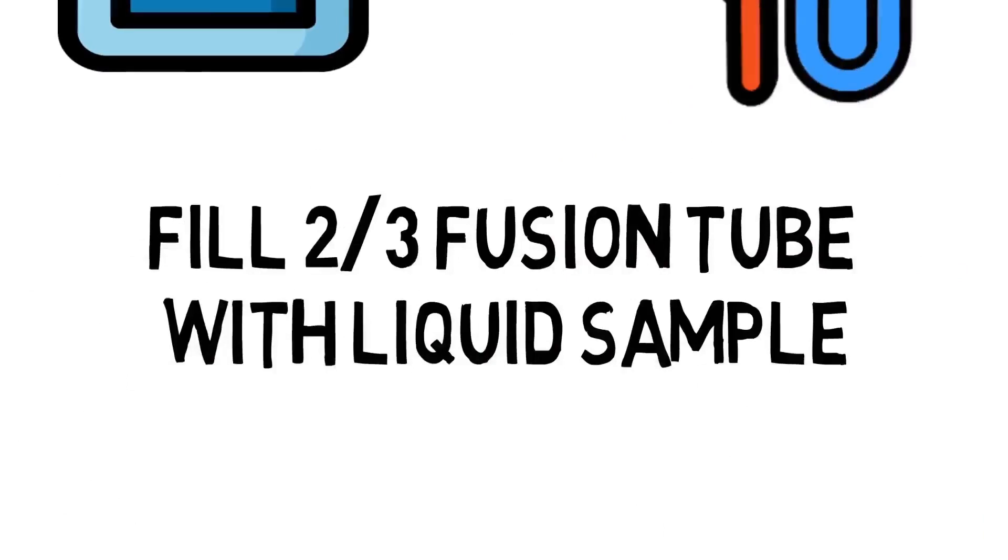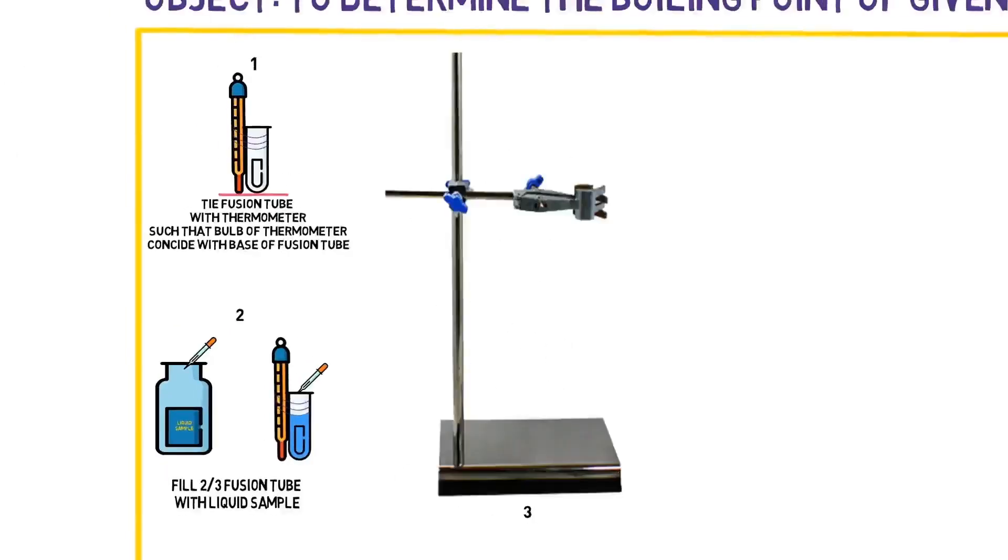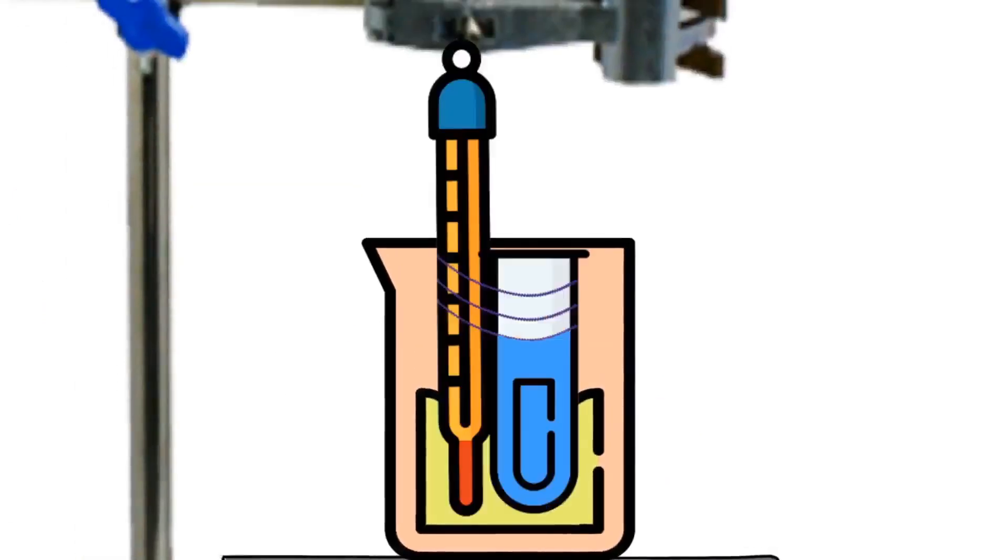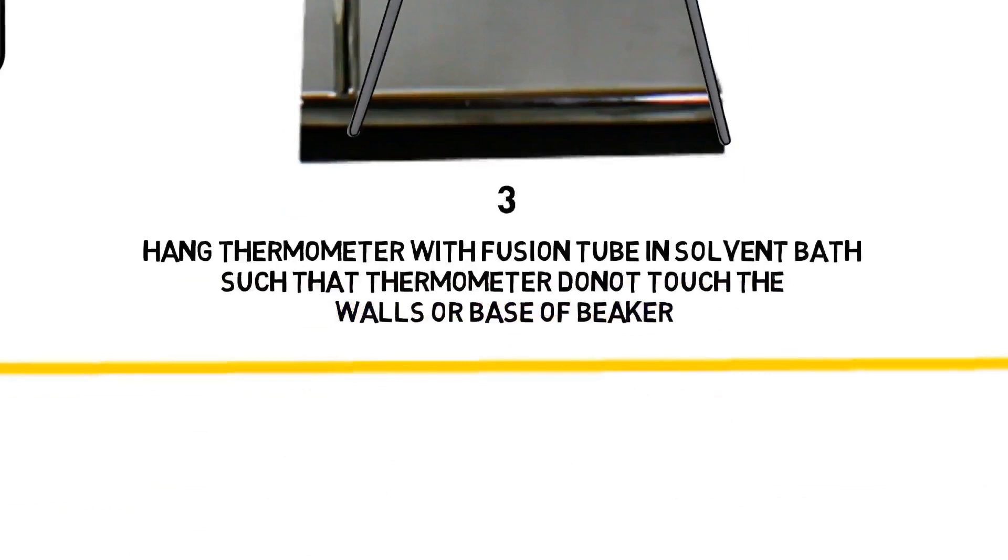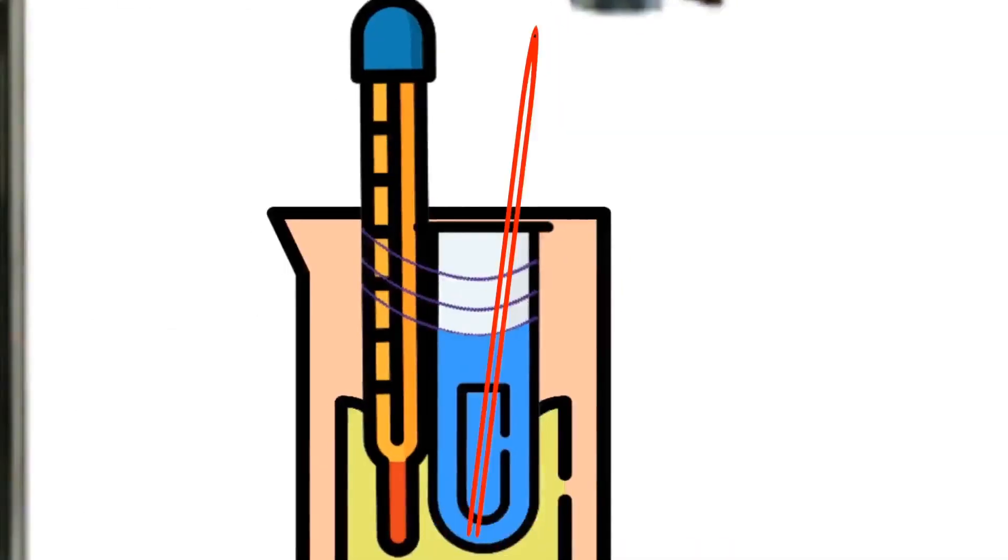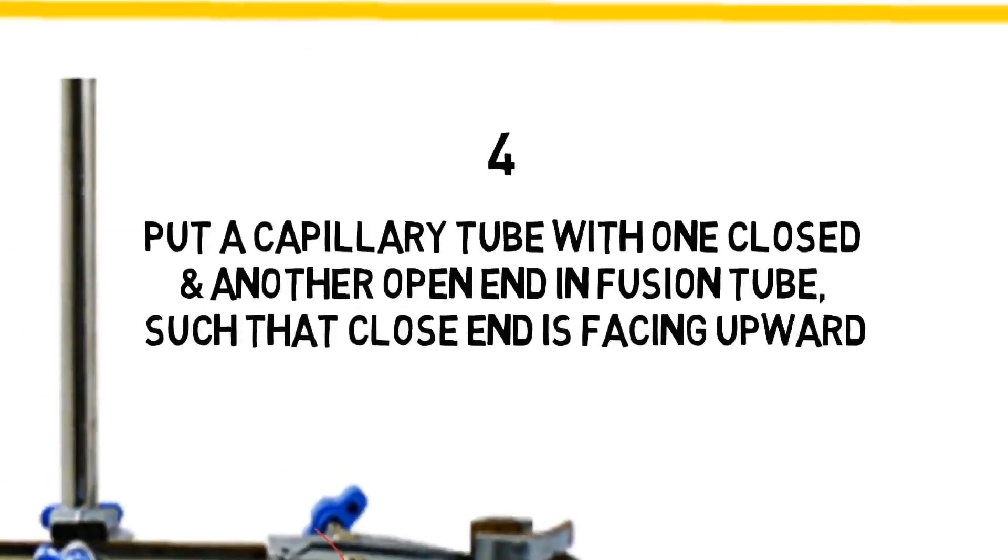Fill two-third of fusion tube with liquid sample. Hang thermometer with fusion tube in solvent bath such that thermometer doesn't touch walls or base of beaker. Put capillary tube in fusion tube such that close end is facing upwards.